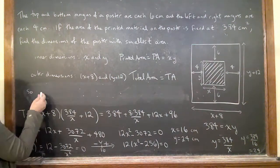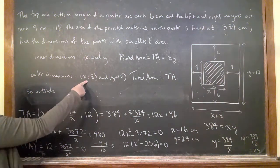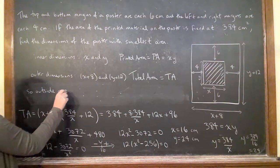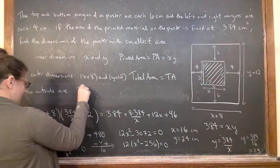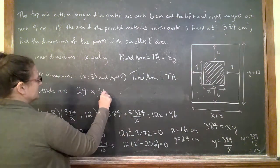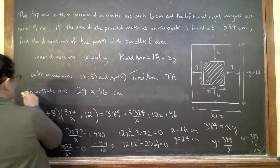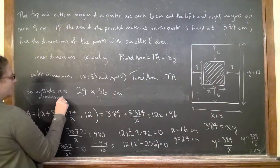So let us find the answer for the outside dimensions. So outside dimensions: I've got 16 plus 8 is 24, and 24 plus 12 is 36. So outside dimensions are 24 by 36 centimeters.